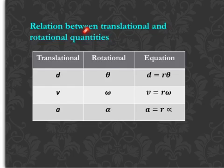Relation between translational and rotational quantities. Firstly, translational displacement is related to rotational displacement through this formula. Likewise, translational velocity and rotational velocity through this one. And finally, translational acceleration A and rotational acceleration alpha related to each other through this formula.